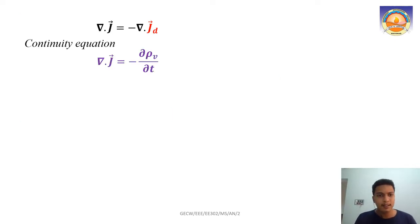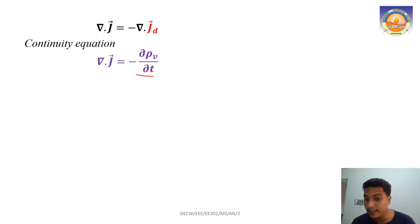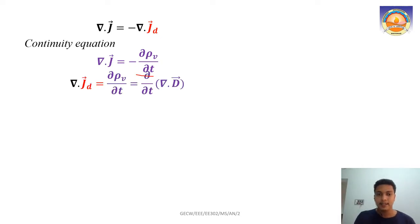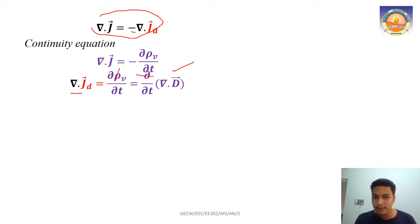The continuity equation states del dot J equals minus ∂ρv/∂t — the time rate of change of volume charge density equals the divergence of the conduction current density, which results from the flow of electrons in a conductor. Since del dot J equals minus del dot Jd, the negative signs cancel and del dot Jd equals ∂ρv/∂t.